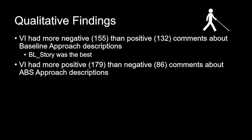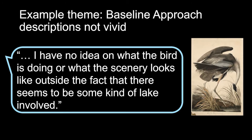People with visual impairments had more positive than negative comments about the Art Beyond Sight approach descriptions. One example theme was that baseline descriptions were not vivid. For example, one participant said: 'I have no idea what the bird is doing or what the scenery looks like outside of the fact that there seems to be some kind of lake involved.' They were missing information about how the bird was posing — which could be helped by the reenact task — as well as details about the grass, ground, and the fact that much of the background is actually air, not lake.